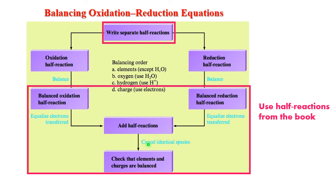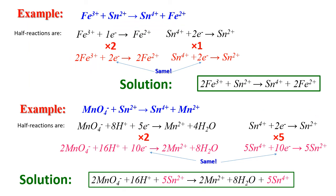Now you cancel identical species. Of course electrons will cancel. Usually if you have water molecules on both sides they will cancel as well. So let's look at two examples. Simple example: Fe³+ reacts with Sn²+ to make Sn⁴+ and Fe²+. Half-reactions are: Fe³+ plus one electron goes to Fe²+, Sn⁴+ plus two electrons goes to Sn²+.